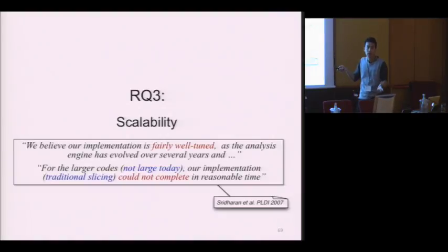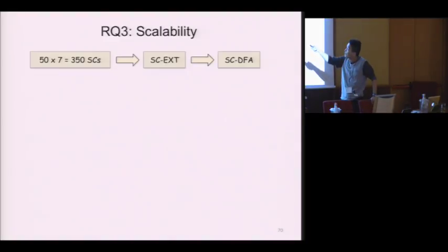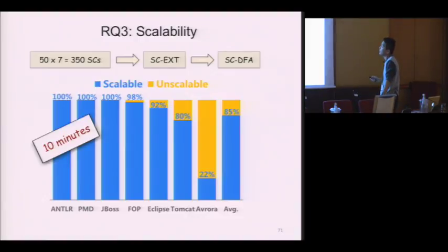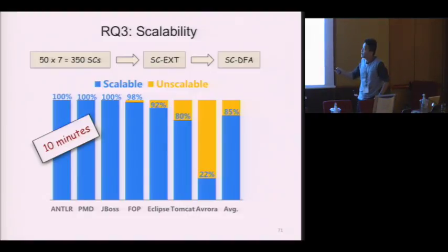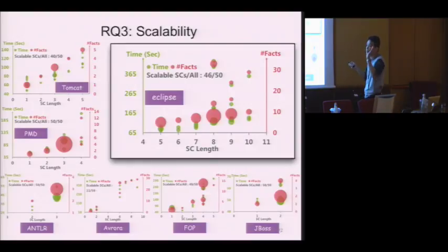Now let's see whether Tailor is scalable for large OO programs. To do this, we conduct a stress test — we randomly select 50 sequential criteria for each of the seven applications, giving us 350 sequential criteria total. We feed them to the SC-based extension algorithm, get extended SCs, and feed them to the SC-based dataflow analysis to tailor the programs. We found that on average Tailor is scalable for 85% of cases, and for all scalable cases, Tailor finishes running within 10 minutes. There is additional interesting information about scalability in the paper.